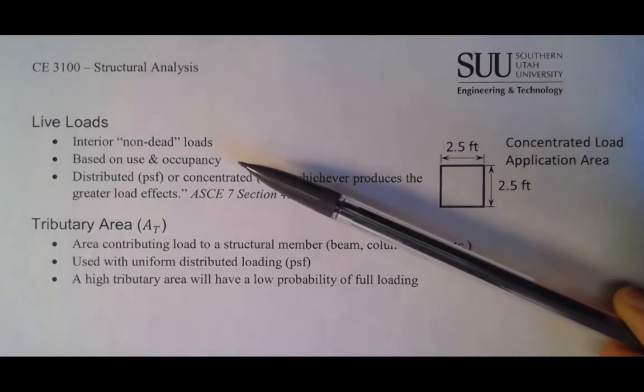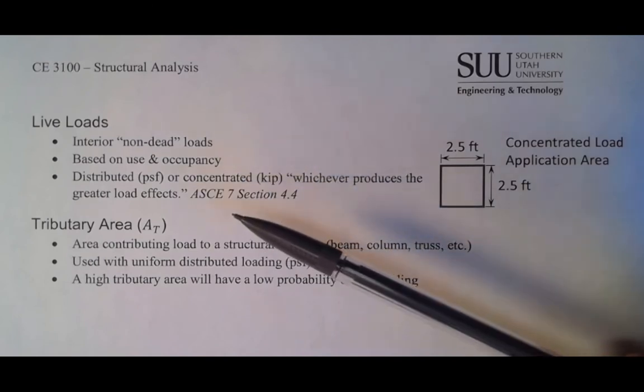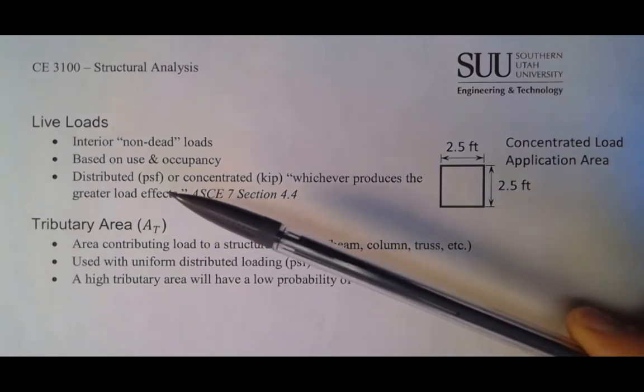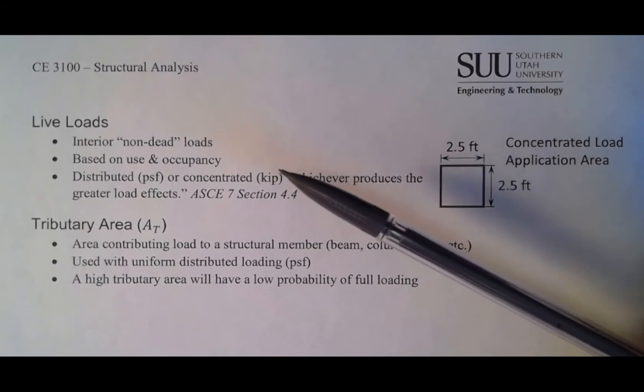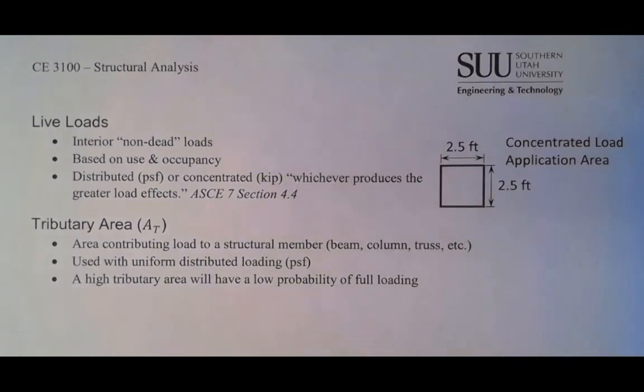They're based on use and occupancy, and basically what you do is you look them up in a table. I'll show the table in ASCE 7, it shows both an area load and a concentrated load, and what the specification says is that you have to use whichever produces the greater load effect. So whichever, for example for a beam, whichever gives you the largest moment, that's what you use. So this is ASCE 7, these are the provisions here.